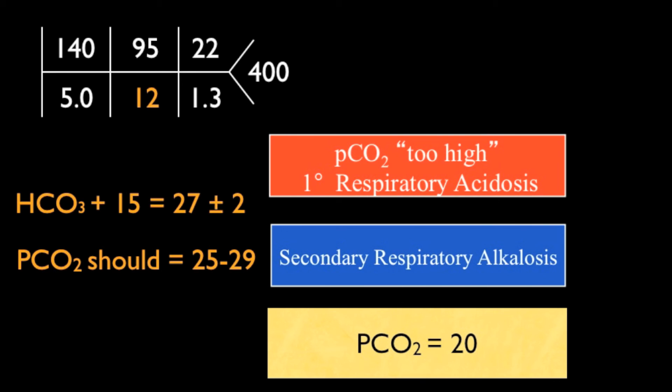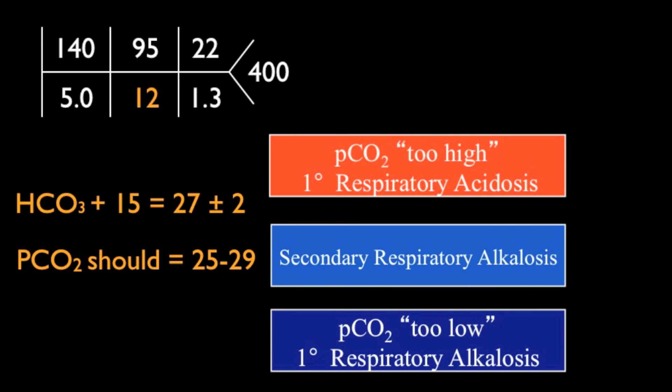In a patient with a PCO2 of 20, that also does not follow the rule. It's too low, so we have a primary respiratory alkalosis on top of the other process.